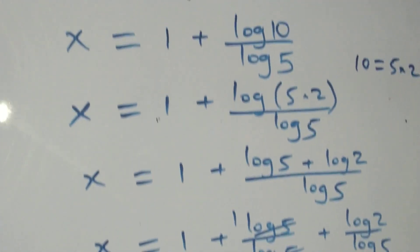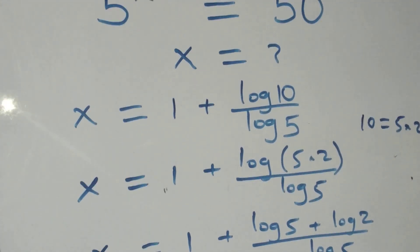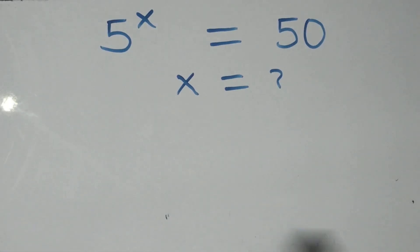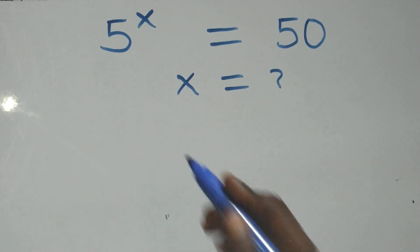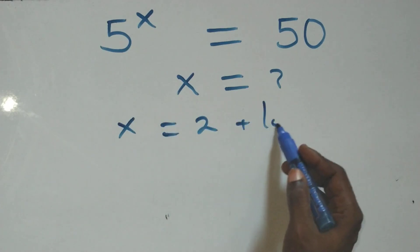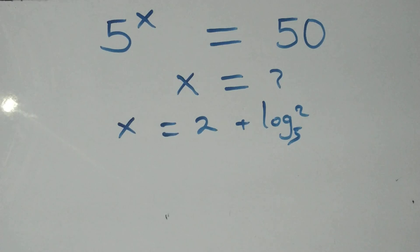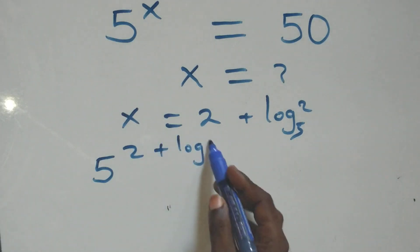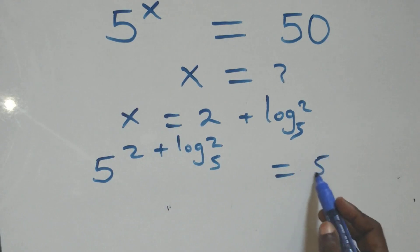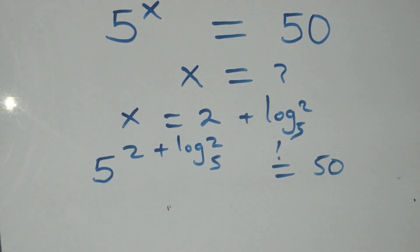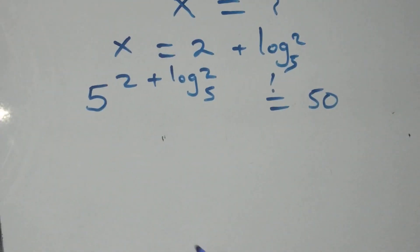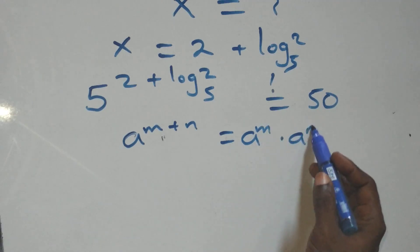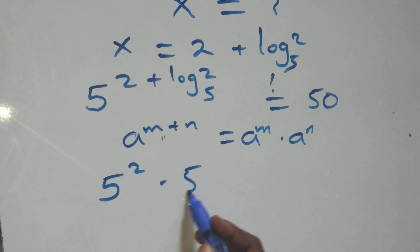We substitute x = 2 + log₅(2) back into the equation, giving 5^(2 + log₅(2)) = 50. Applying the law of indices, where a^(m+n) = a^m × a^n, this becomes 5² × 5^(log₅(2)) = 50.